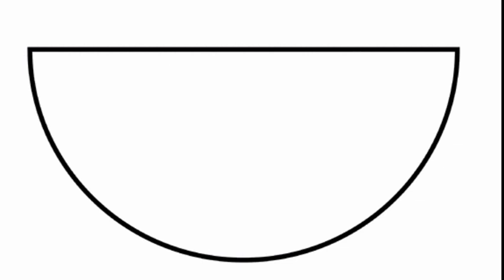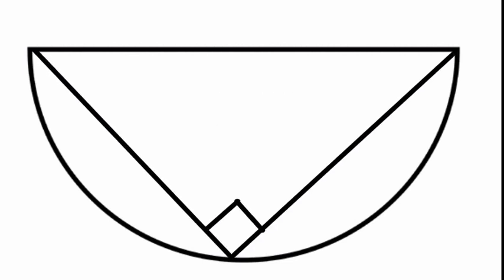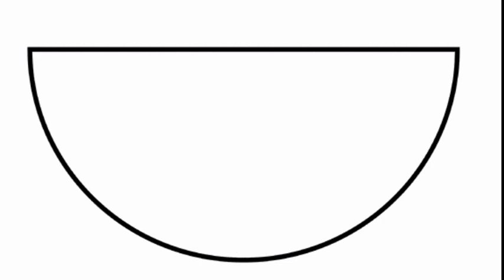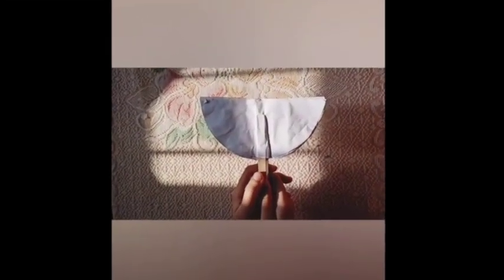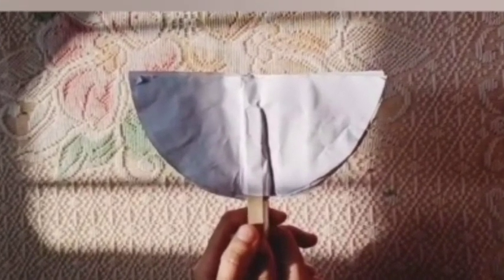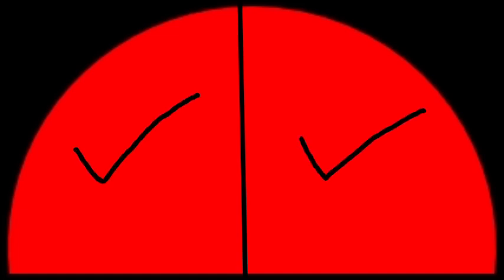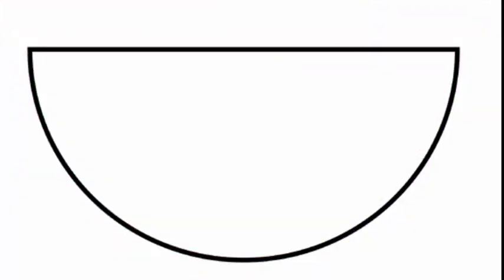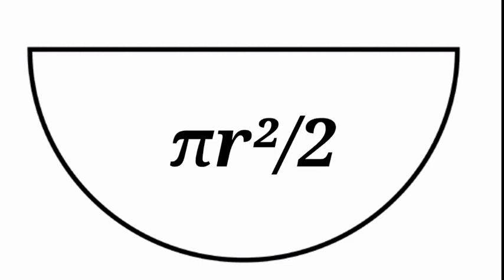In geometry, a semicircle is a two-dimensional geometric shape that forms half of a circle. Being half of a circle's 360 degrees, the arc of a semicircle always measures 180 degrees. A triangle inscribed in a semicircle is always a right triangle. We can see that this is a semicircle. A semicircle is a one-dimensional locus of points that form half of the circle. The perimeter of a semicircle is πr, and the area of a semicircle is ½πr².